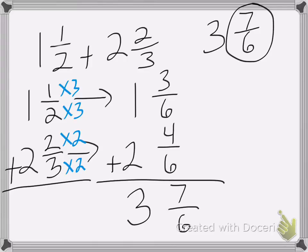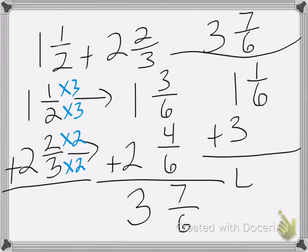So let's change 7/6 into a mixed number. 7/6 becomes 1 and 1/6, which I need to add to my 3, okay? So I end up with 4 and 1/6 as my answer, and that's all. Good luck on your homework.